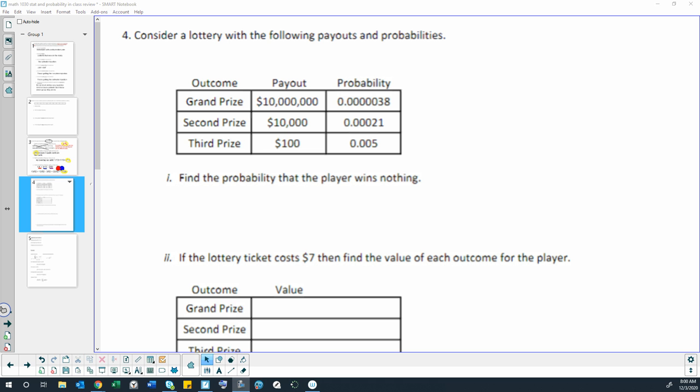We want to find the probability that a player wins nothing. The probabilities that a player will win something can come from adding those three probabilities together. So let's add the three numbers together.